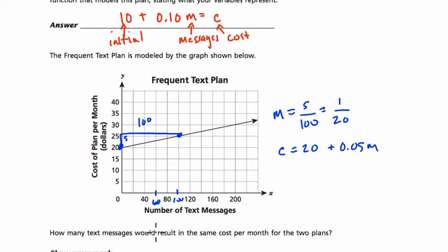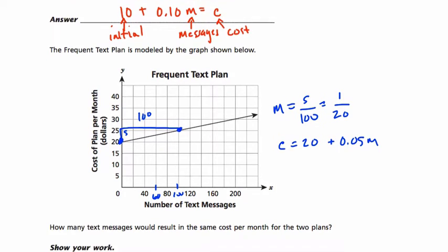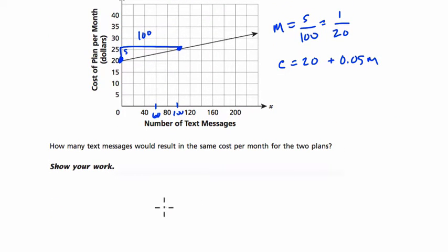How many messages would result in the same cost per month of the two plans? So all I have to do to solve this is set my two equations equal to each other. We've got 10 plus, I'll write, 0.1 messages. When does this equal 20, our second plan, 20 plus 0.05 times the amount of messages?